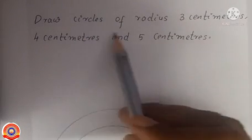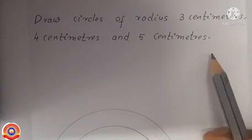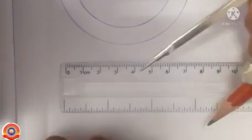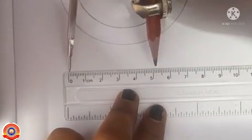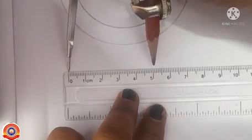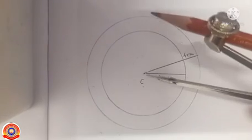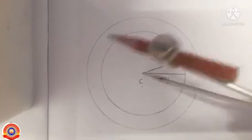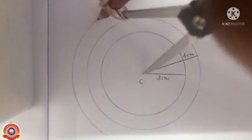Next, we have to draw a circle of radius five centimeters. Take the ruler and compass, take the measure of five centimeters in the compass. Fix the pointed end of the compass at the same center and then turn the compass around.